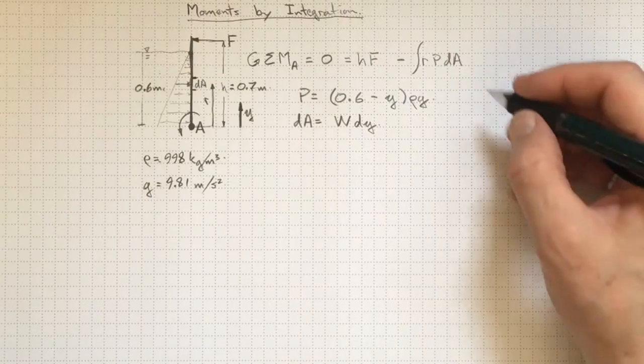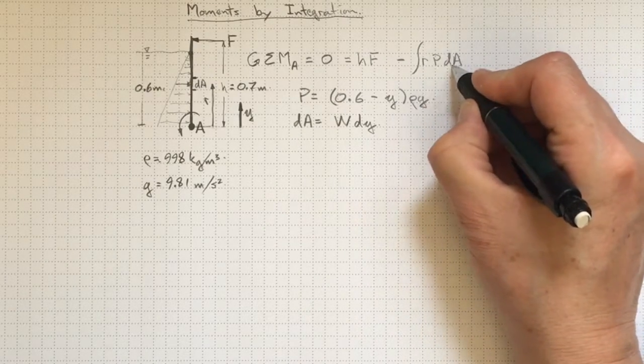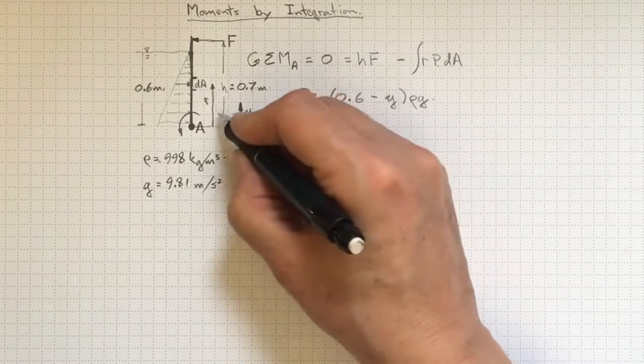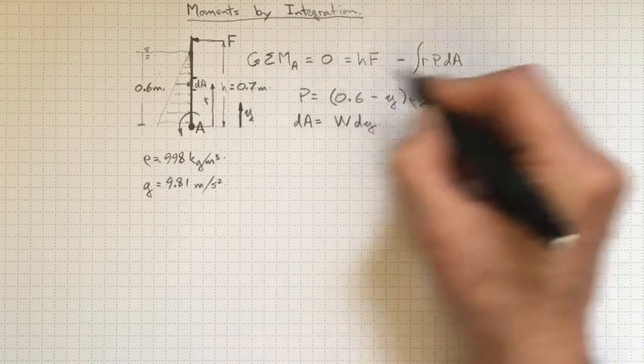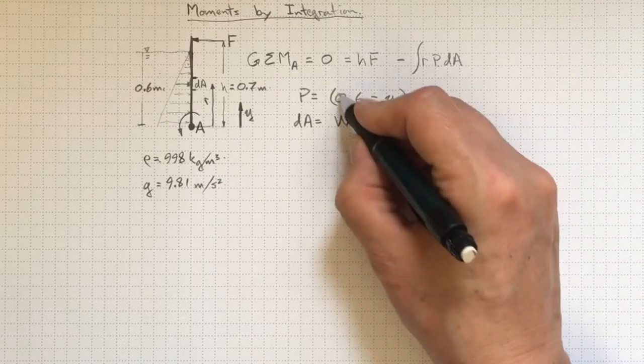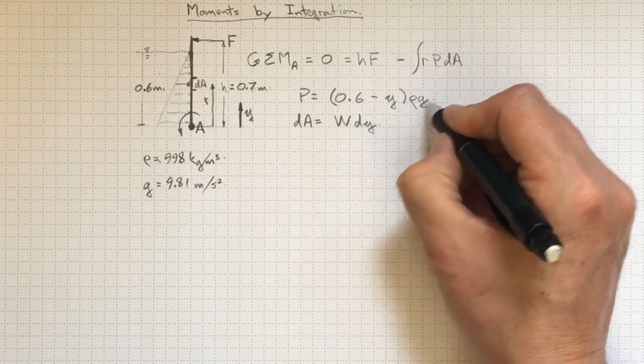So if I want to do the integral R P dA, I know what R is. R is just equal to Y. I know what P is: 0.6 minus Y times rho g.